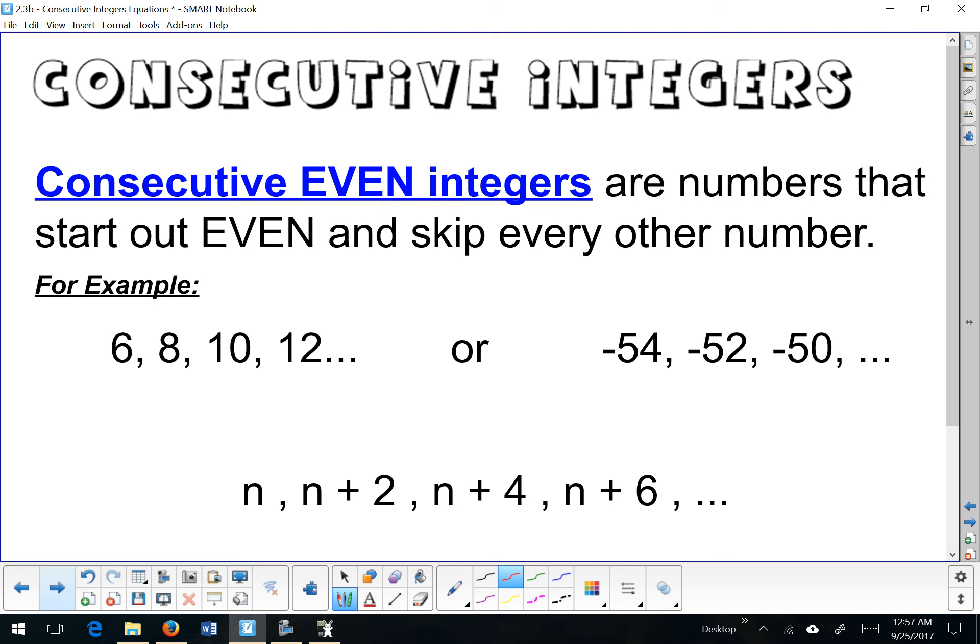For the second part of your notes, you'll see that they're talking about consecutive even integers. Those are numbers that start out even, but they skip every other number so that they can remain even. So if you start at 6, you're going to skip 7 and go to 8. I'm not increasing by 1, I'm actually increasing by 2 each time. That's why this series, starting with n, would jump to n plus 2, and then it would jump n plus 4.